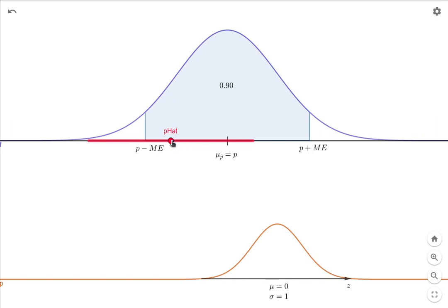Of course it's true that 10% of the time p hat will be outside of here and miss it, or possibly down here. And then this red line, this red interval misses the mean, but 90% of the time it's going to capture that mean. That's what we mean by a confidence interval.